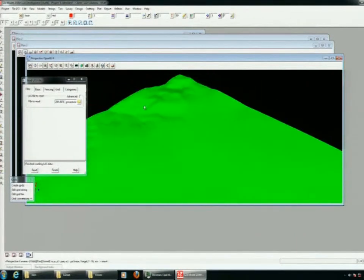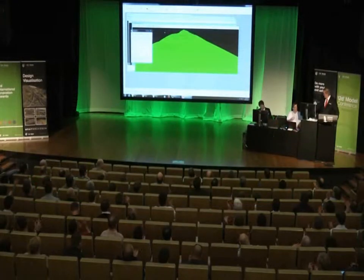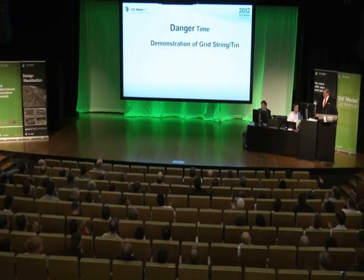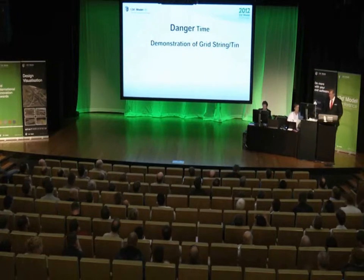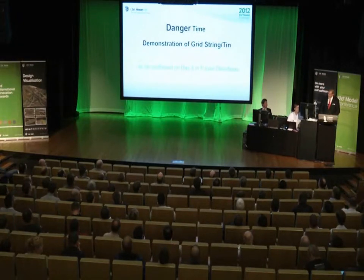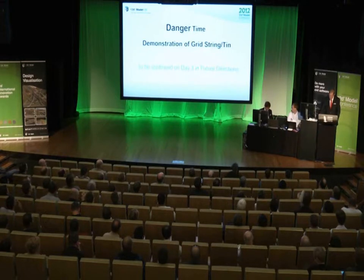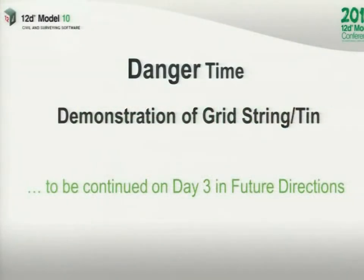So that's just effectively grid strings and grid TINs. We'll actually be continuing this on day three in the future directions to show you some of the things we've been working on getting ready for version 11 to do with point clouds and things. Unfortunately in our examples the point clouds had colour in them. So we'll probably show one of those on Tuesday as well. We will continue.